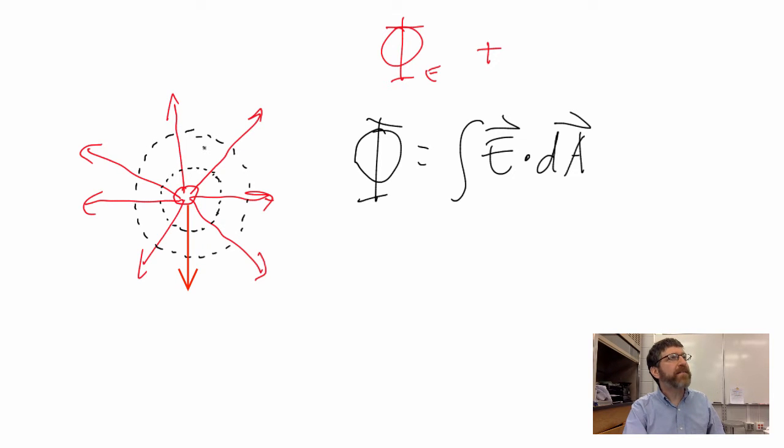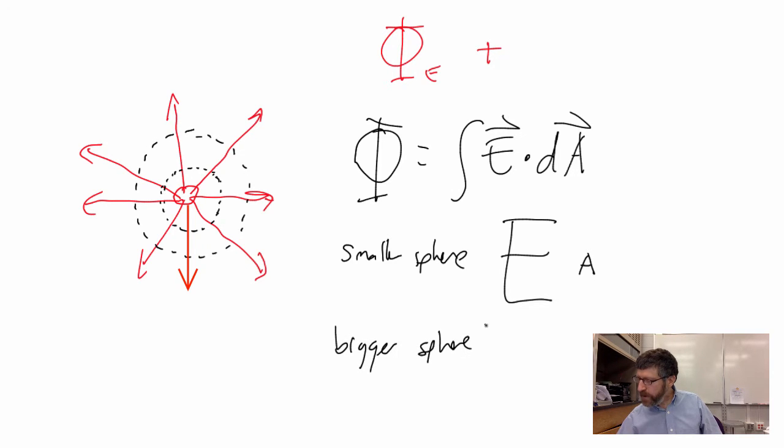Look at those field lines. They're getting farther apart. So even though when you integrate this for the smaller sphere, and we're going to have, it's going to be the same everywhere on the sphere, the smaller sphere, I'm going to have a stronger field and a smaller area. But for the bigger sphere, what is going to be different?